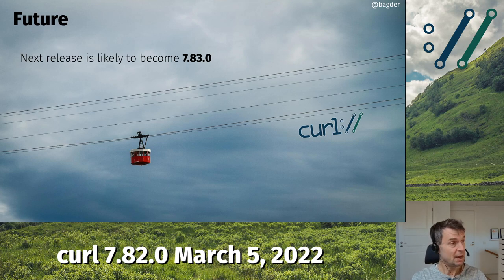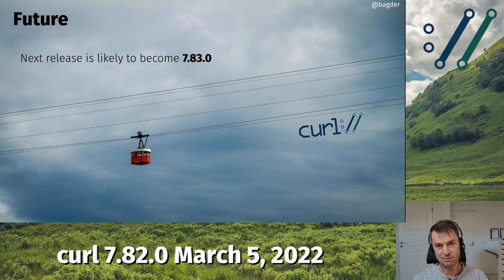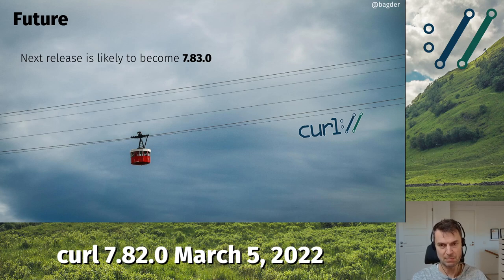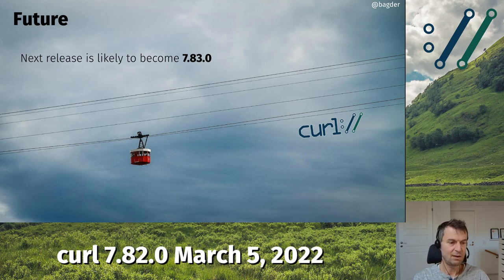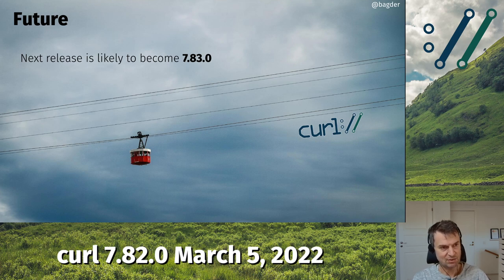Going forward, I'm convinced that we're going to call the next release 7.83.0 because I think we are going to merge changes and features that will warrant bumping the minor number. We tend to do that. I know we have a bunch of pull requests already pending, waiting to get included, that will require us to bump the minor number anyway. So I expect that to happen.